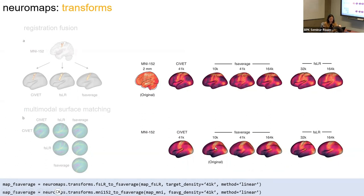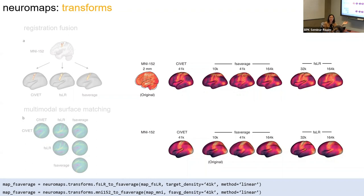We also do this for different densities. The default in Neuromaps is always to downsample — you don't want to create data. If you're comparing two maps where one is 32K and one is 164K, the recommendation is to go from 164K to 32K. Personally, I think the transforms are the game-changer in Neuromaps. In my own work, it's the transforms I use most because it can be such a pain to figure out how to get data in the same space otherwise. The function naming is intuitive — for example, if you want to go from FSLR to FS average, the function is called FSLR to FS average.